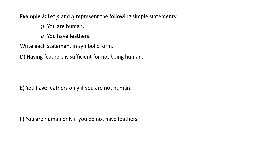'Having feathers is sufficient for not being human.' The condition or hypothesis is having feathers, so that is Q. 'Sufficient' tells us it implies the conclusion. Human is P, so not being human is ∼P. Symbolically, this is Q → ∼P, read as 'having feathers implies you are not human.'